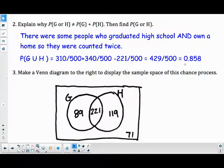Make a Venn diagram to display the sample space of this chance process. So you have the total number of graduates would be these two numbers. You have the 221 in the overlap. 89 people were graduates but not homeowners. 119 were homeowners but not graduates. And 71 were neither.